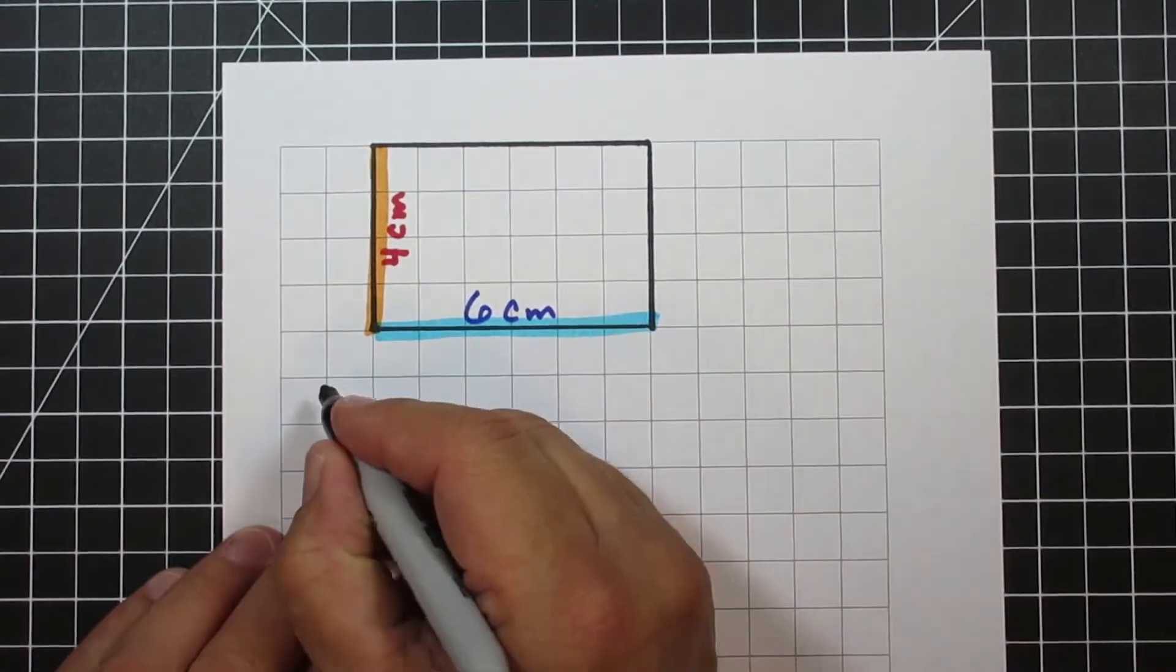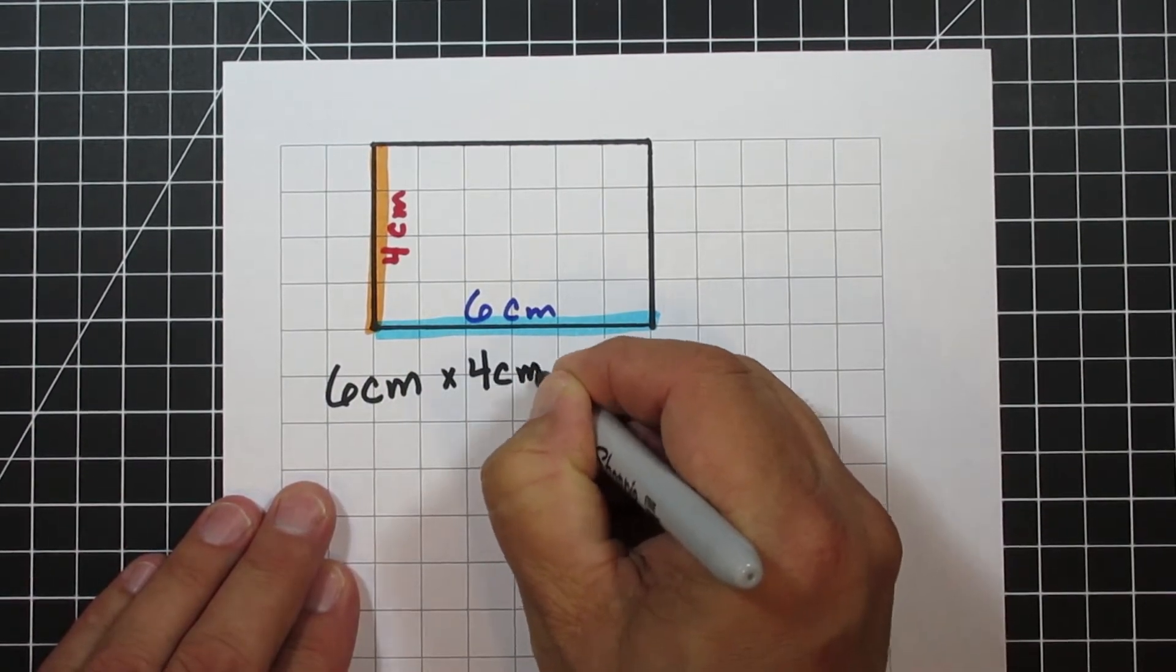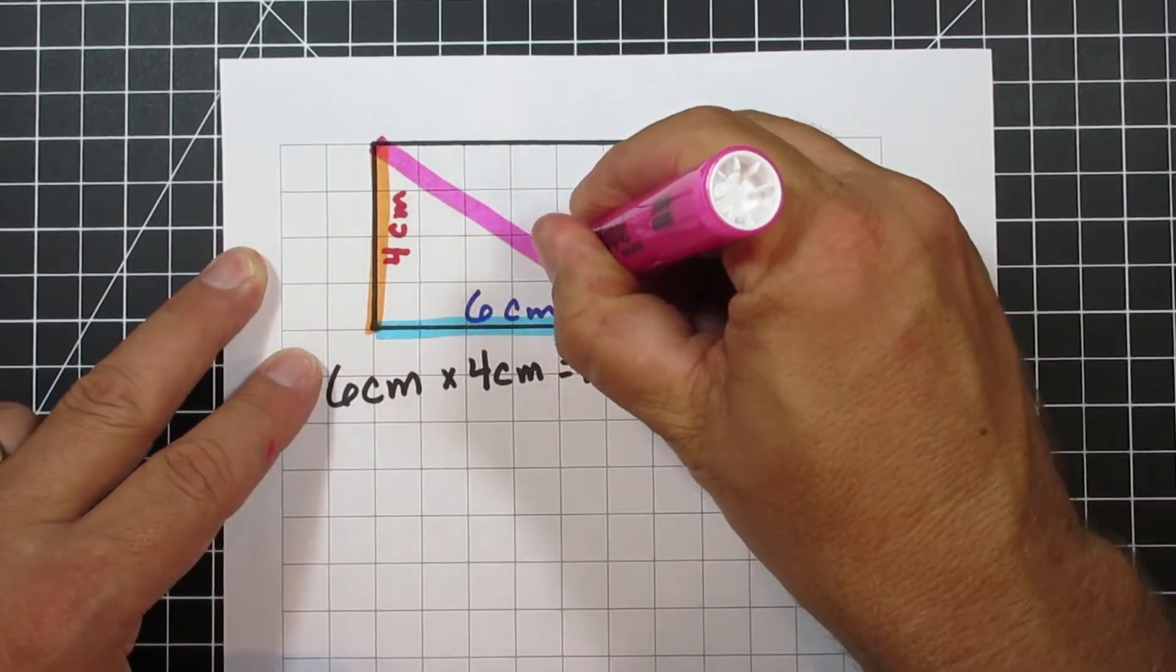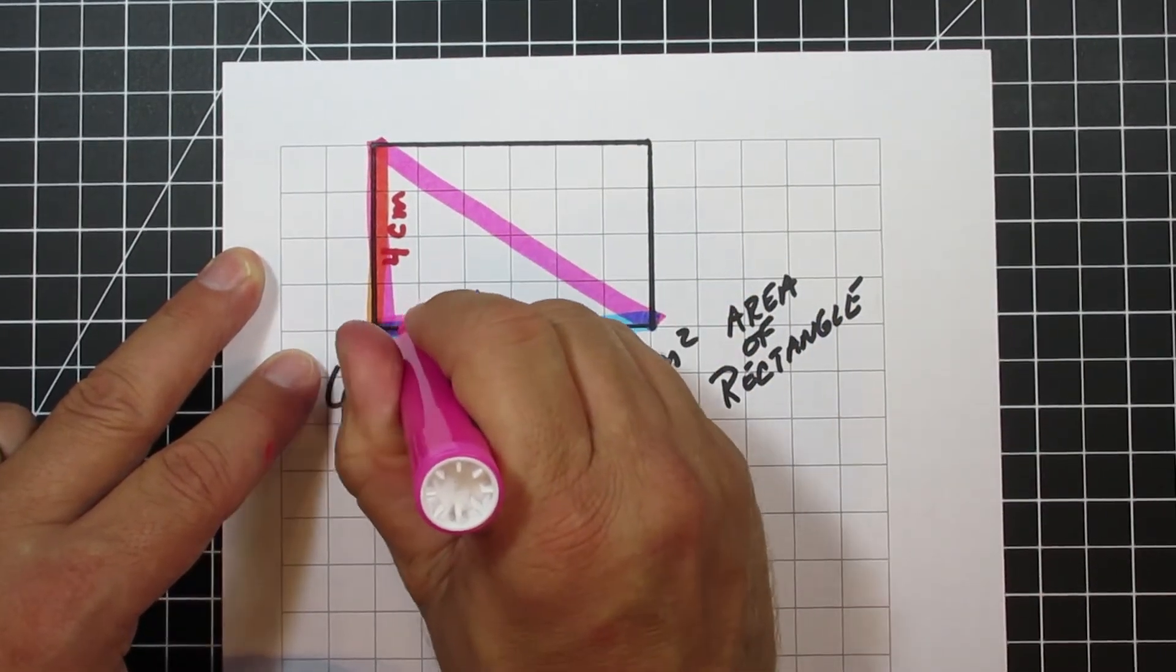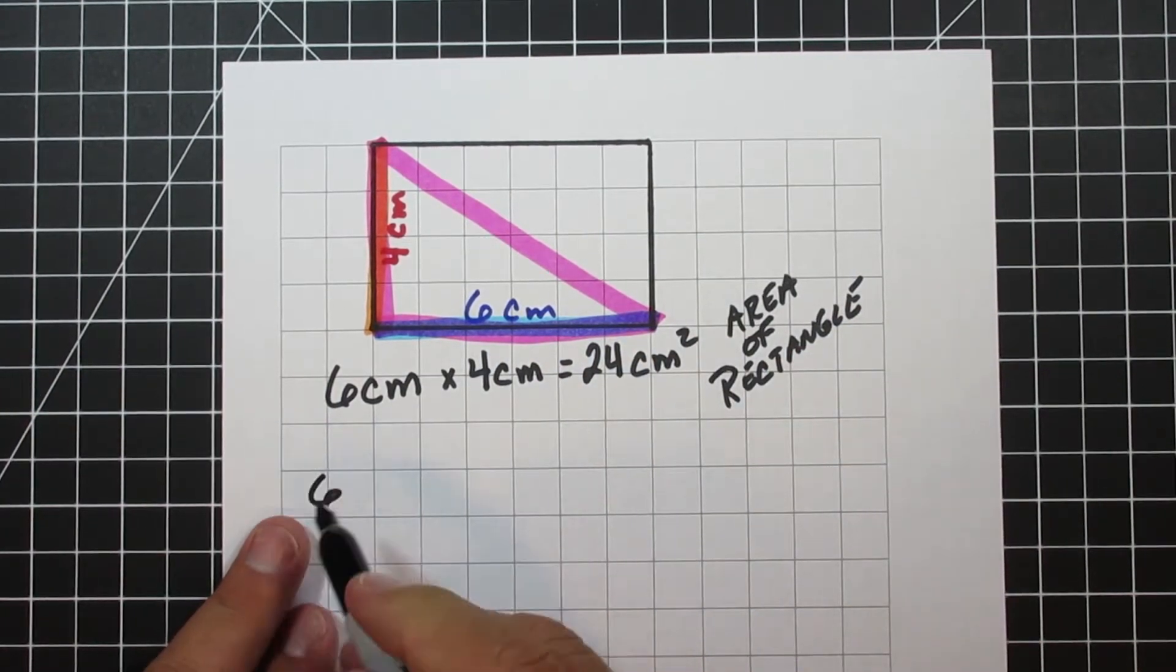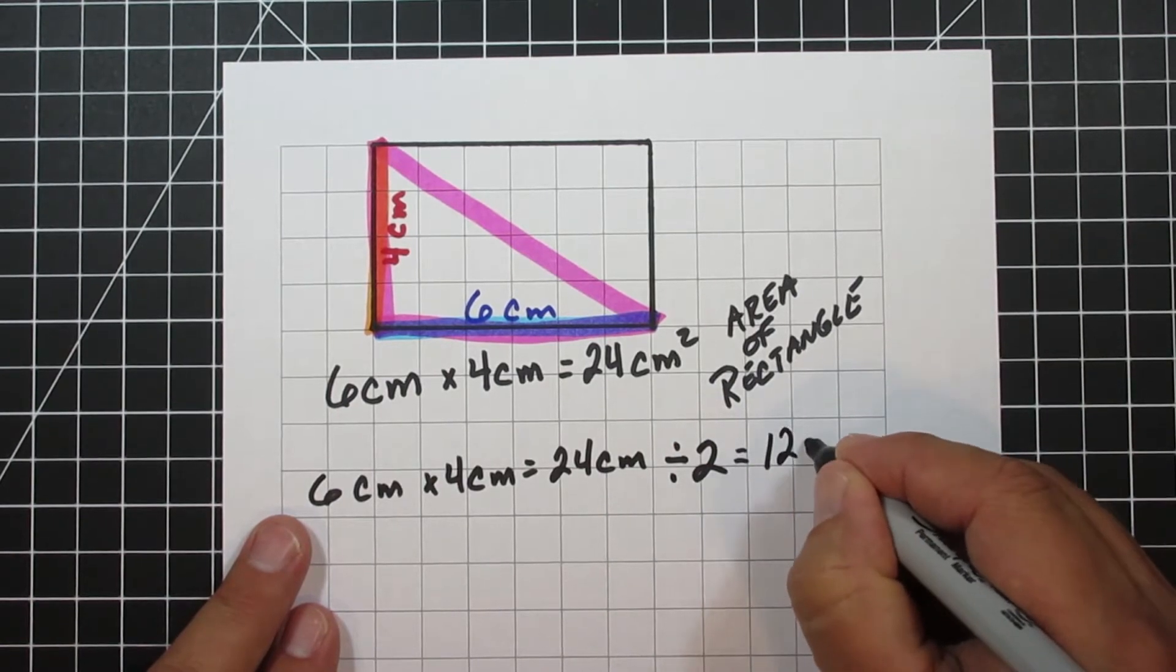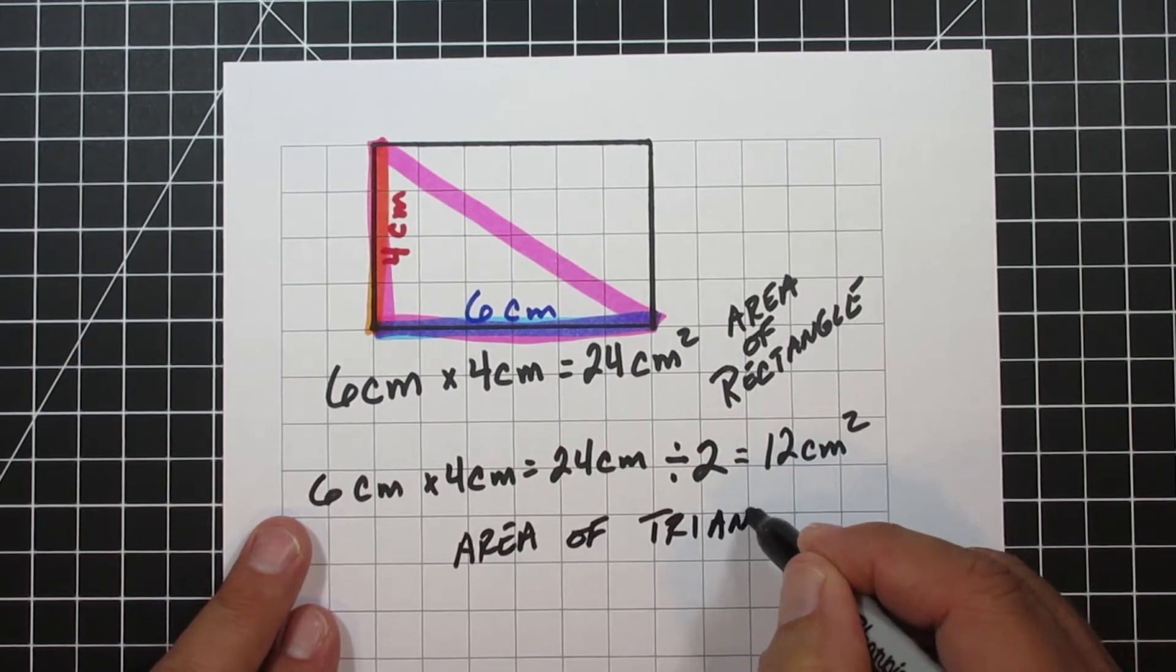If we look at this rectangle here, this rectangle is a base of 6 centimeters and a height of 4 centimeters. So when we multiply these two together, we get 24 centimeter squares. But if I decide to take this rectangle and draw a diagonal line, basically I'm going to create a new triangle here. This triangle will have the exact same base as the rectangle, 6, the exact same height, 4. But you can look at this and you can tell that the area is half. And it is. And to get that basically what we're doing is we're either dividing by 2 or we'd have to multiply this by 1 half. And that's how we can get the area of a triangle.